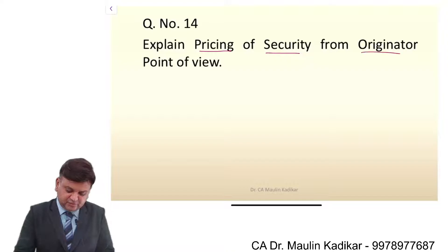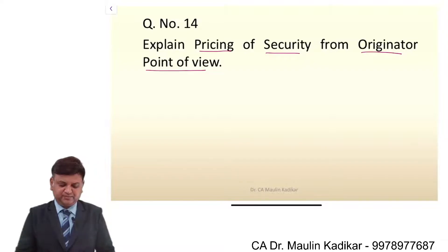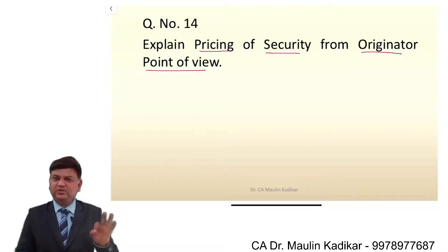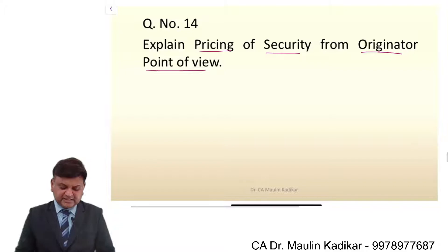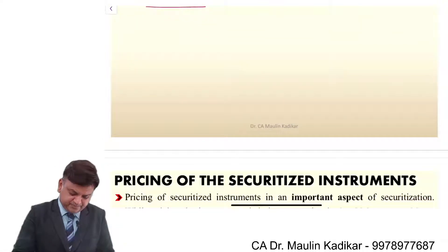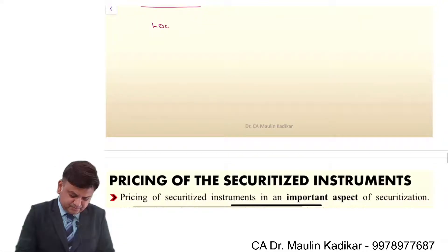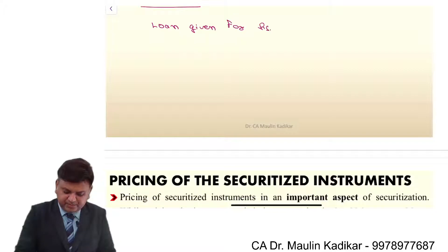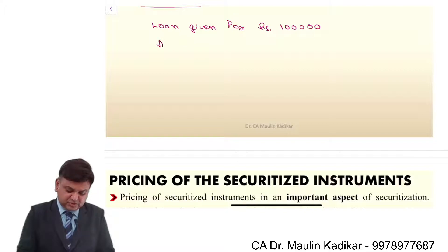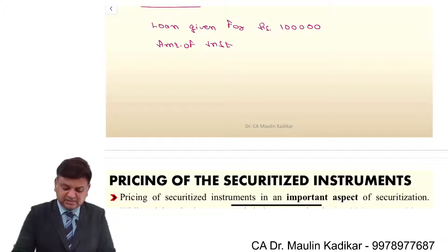Explain pricing of the security from the originator's point of view. In my understanding, it's very simple. As I have given you a basic example, a loan given for Rs. 1 lakh. The amount of installment is kept in such a way so that the amount into number of installments equals Rs. 1 lakh 50,000.